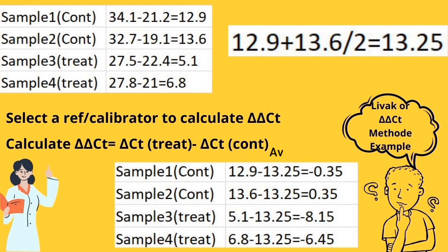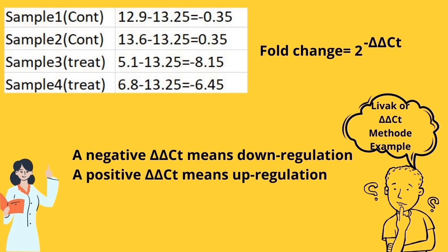Now to calculate delta delta CT, you must select a reference or calibrator. To do this, you can average the delta CT of control. Now you can calculate delta delta CT for all your samples. Now that you calculated delta delta CT, for last and final step, you can report it based on fold change.